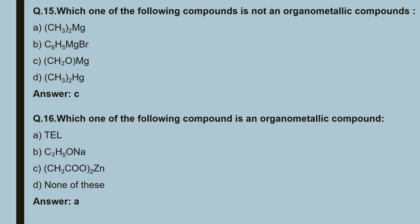Question 15: which one of the following compound is not an organometallic compound? Options: (CH₃)₂Mg, C₆H₅MgBr, CH₂OMg, (CH₃)₂Hg. The correct answer is C — CH₂OMg is not an organometallic compound. The other three are organometallic compounds.